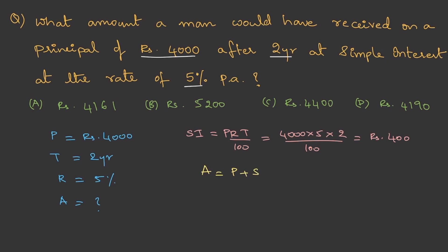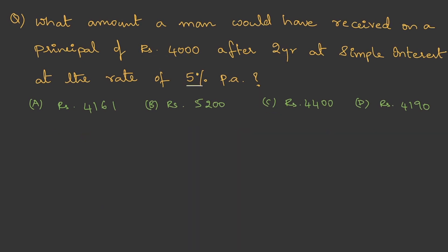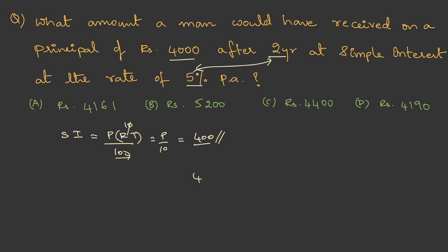Simple Interest = PRT/100 = 4000 × 5 × 2 / 100 = ₹400. Then Amount = Principal + SI = 4000 + 400 = ₹4,400. Therefore the answer is option C. For a quicker mental approach: R × T = 5 × 2 = 10, then 10/100 = 1/10, so SI = 4000/10 = 400, and Amount = 4400 — done mentally without pen.